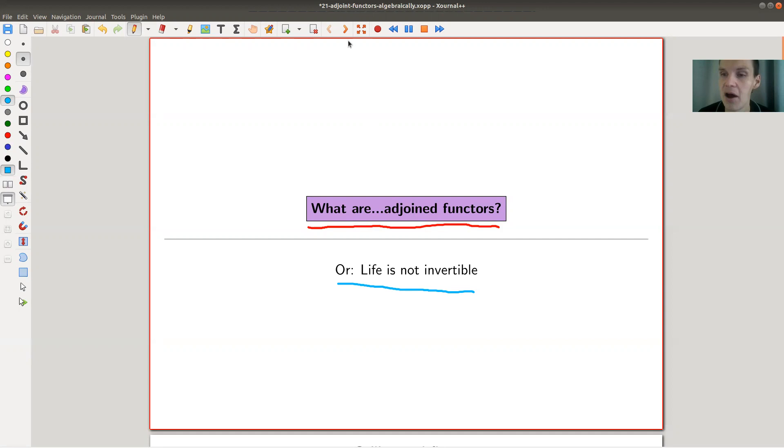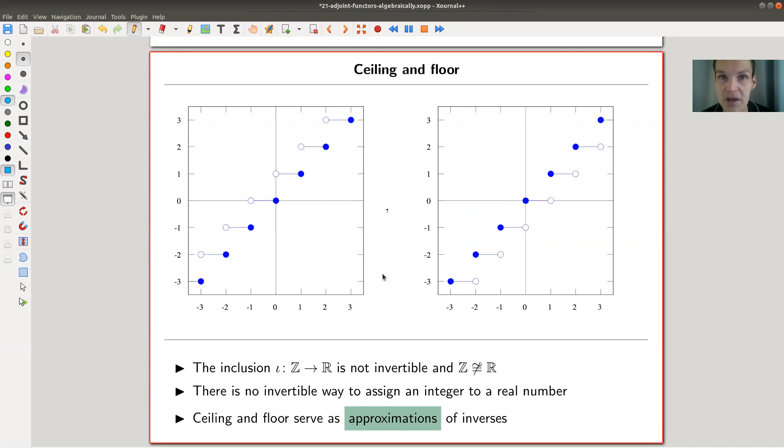Okay. So the slogan is, as I said, life is not invertible. So functions or whatever you consider are usually not invertible. A good example, and actually an example of an adjoint pair in the end, is ceiling and floor.